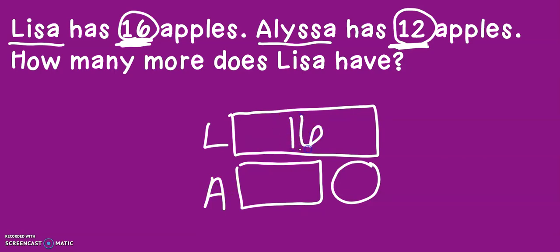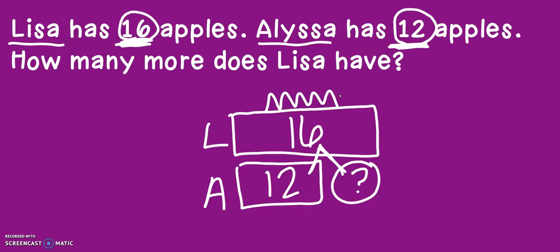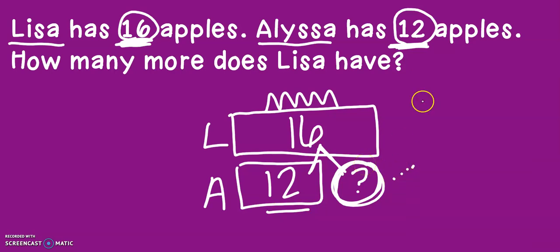Lisa has 16 apples and Alyssa has 12 apples. That means that our missing number goes in our circle. Now if I think about these numbers as a math mountain, it helps me understand what I should do. In this problem, I'm missing one of my addends — I have my total and I have one of my addends. I'm going to use the counting up strategy: starting at 12, I count up 13, 14, 15, 16. I counted up four to get my answer.